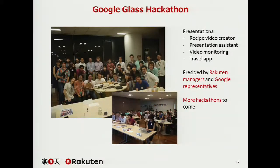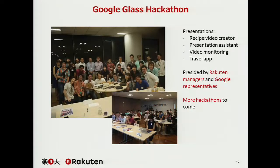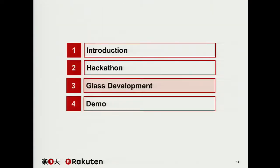Specifically, there's a recipe video creator — you can take a video while chopping up onions. There's one where you can use a presentation system, so you can move slides with your glass, or use it for video monitoring, and also for traveling with the Rakuten Travel application. Rakuten managers and Google representatives shared ideas with us so we could improve the apps more, and further on we'll have more hackathons. But that's the ideas — the most interesting part is the actual development, so I'll leave it to Flo.